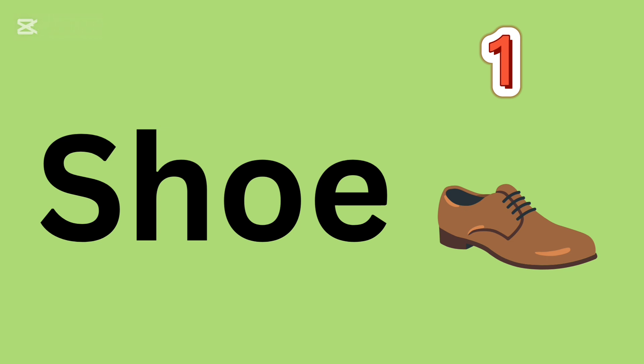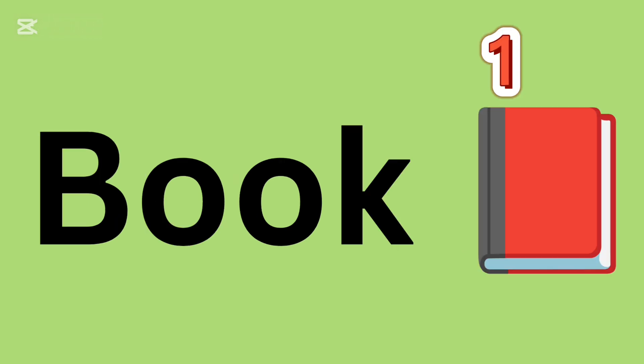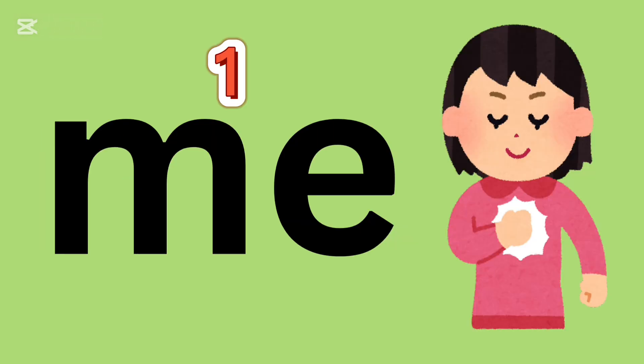Shoe. Yes, it has one syllable. Book, one syllable. Yes, one sound. Me, it has also one sound, means one syllable.